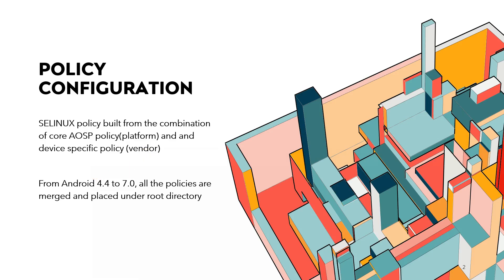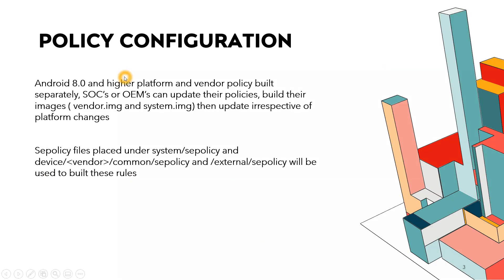So if we have to write any SELinux policy, those policies also should be written in that vendor partition. Prior to Android 7, all the policies were merged under one root directory and clubbed together. But from Android 8 onwards, due to the introduction of the concept of Treble, they divided these policies into system and vendor policies separately. All policies for system-related stuff are contained in system.img and all policies for vendor-related stuff are contained in vendor.img.